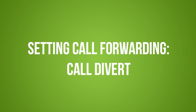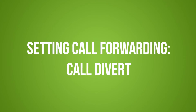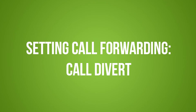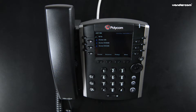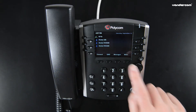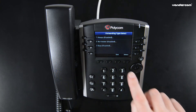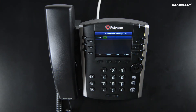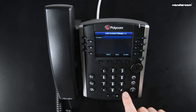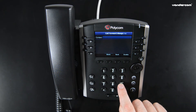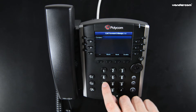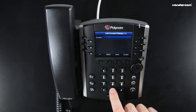To set call forwarding on the phone, press More, then the Forward soft key. Select 'Call Forwarding Always', then press 1 for contact and enter the number to send calls to, such as your mobile or a colleague's extension, and press Enable.